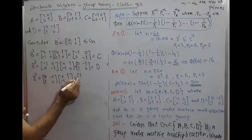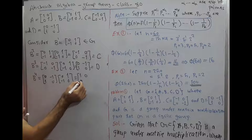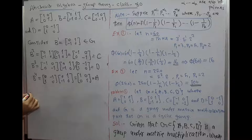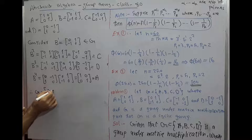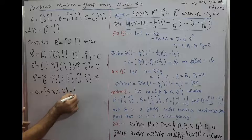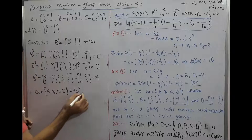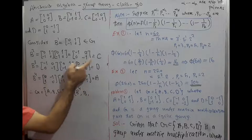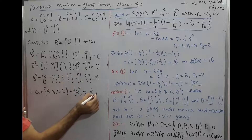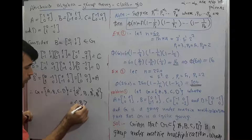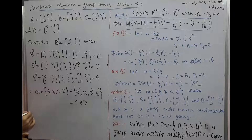Continuing the computation, B^4 equals [1 0; 0 1] = A. Therefore G = {A, B, C, D} = {B^4, B^1, B^2, B^3}, and G is the group generated by B. Therefore G is a cyclic group generated by B.